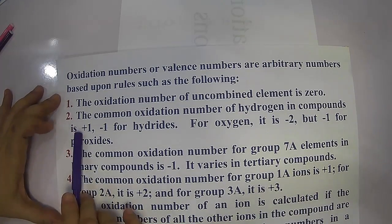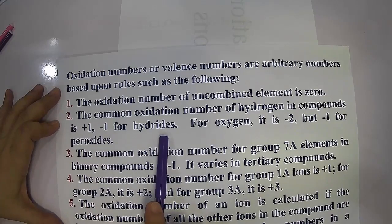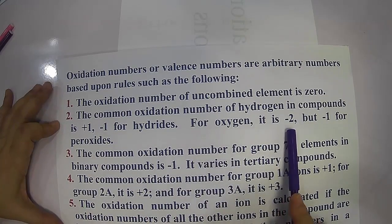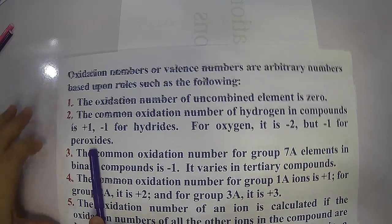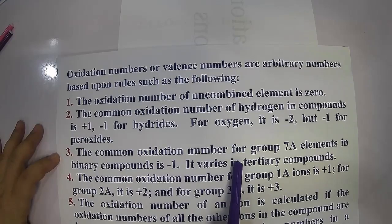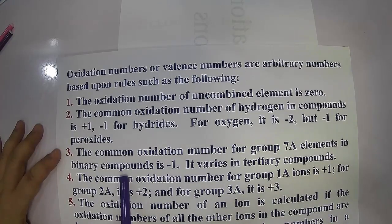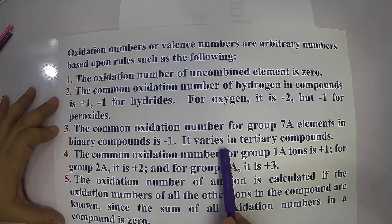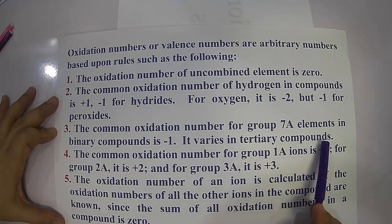Hydrogen has oxidation number negative one in hydrides. For oxygen, it is negative two, but negative one in peroxides. The common oxidation number for group 7A elements in binary compounds is negative one; it varies in tertiary compounds.